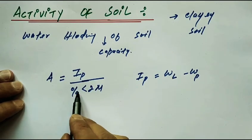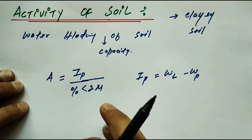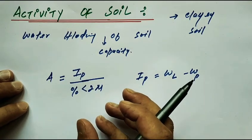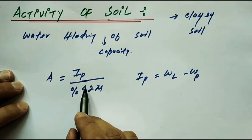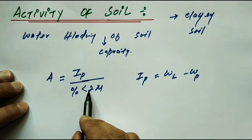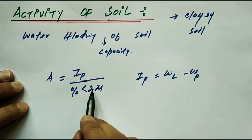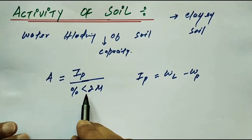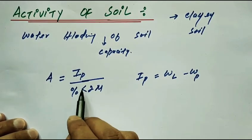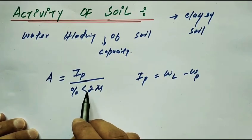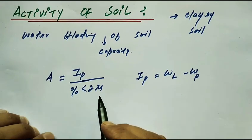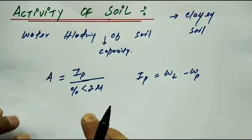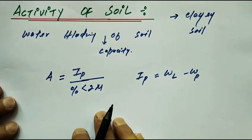Percentage less than 2 micron means: suppose we have soil containing large and small particles. We find the particles whose size is less than 2 micron, and the percentage of those particles is what we use in the formula.